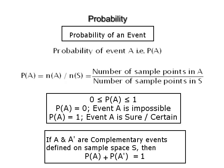If A and A dash are complementary events of a sample space S, then P(A) + P(A dash) = 1.